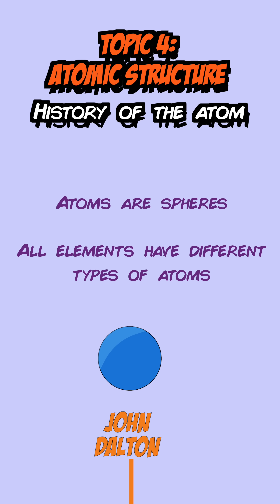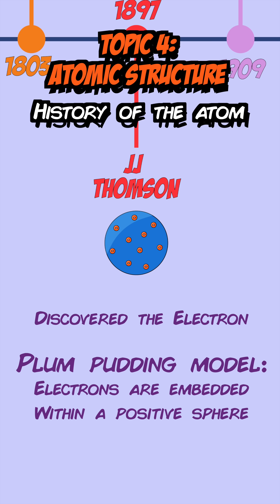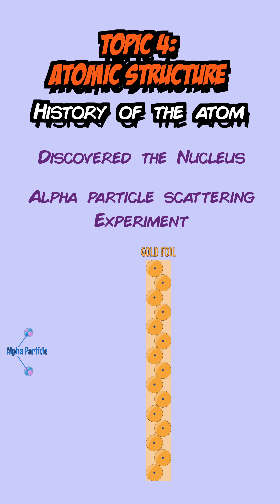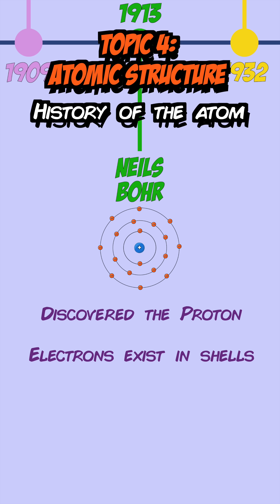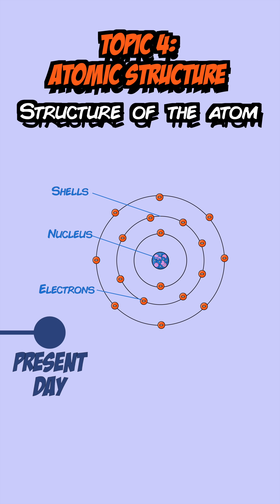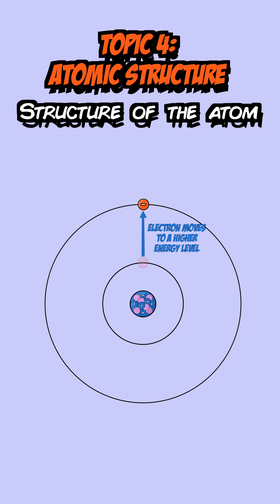Topic 4 is atomic structure. The model of what we think an atom is has changed a lot throughout history. John Dalton said atoms were spheres where each element had a specific type of atom. JJ Thomson then discovered the electron and came up with the plum pudding model, where electrons were embedded within a positive sphere. Ernest Rutherford discovered the nucleus by carrying out the alpha particle scattering experiment, finding that alpha particles mostly pass straight through gold foil while a few were deflected. Niels Bohr then said electrons orbit the nucleus at fixed distances known as shells. Finally, James Chadwick discovered the neutron, leading to the atomic structure we use today. Electrons can go up energy levels by absorbing electromagnetic radiation and go down by emitting electromagnetic radiation.